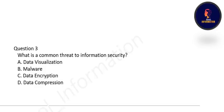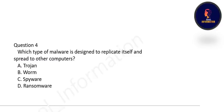Next question: what is a common threat to information security? Options are data visualization, malware, data encryption, or data compression. The correct option is B — malware is a common threat to information security.